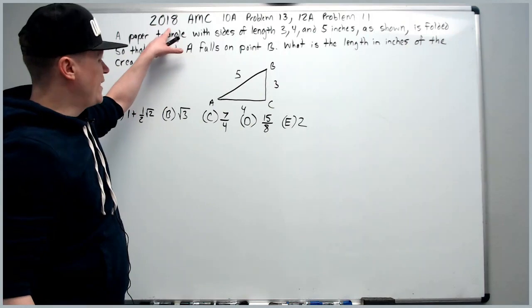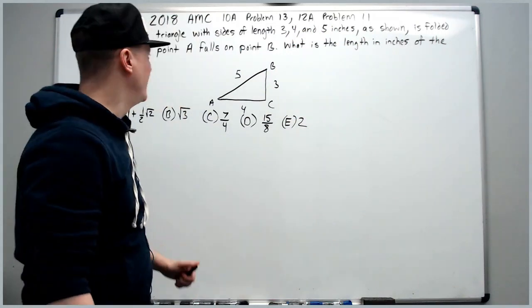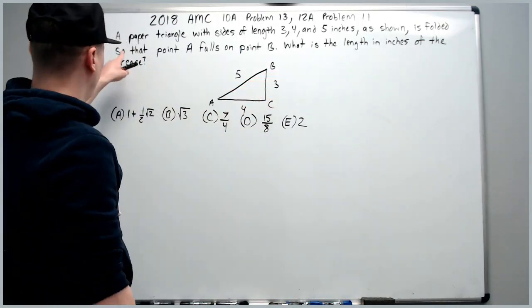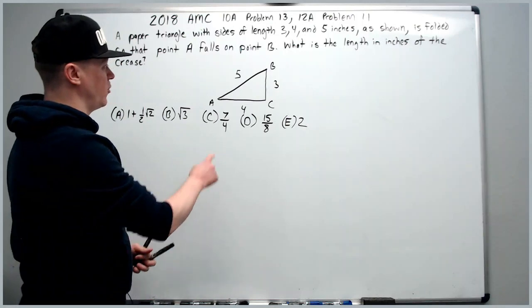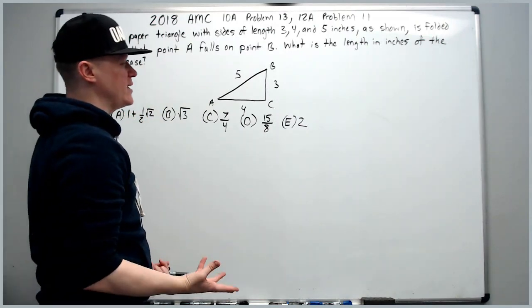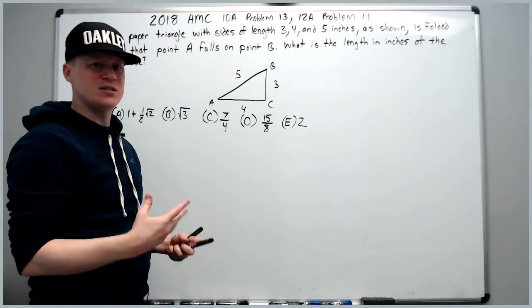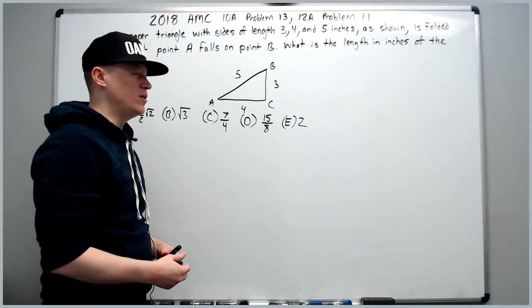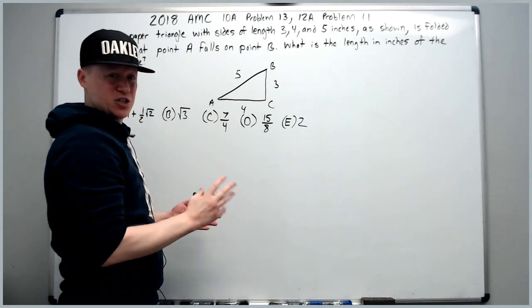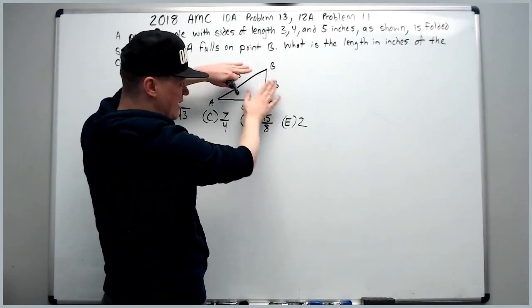And continuing on to the 2018 AMC-10A problem 13, which was also the 12A problem 11, a paper triangle with sides of length 3, 4, and 5 inches as shown is folded so that point A falls on point B. What is the length in inches of the crease? Now there's no crease drawn for you in the problem, and it's not folded for you. One tactic you can use is don't be afraid to bend or fold your test. So you might be able to reason out exactly what the crease is going to look like in here, but what I would do just to be sure is just take the A, fold it over onto the B, flatten it out, make sure A is right on top of B, and then flatten the paper out. Unfold it and there will be a crease.